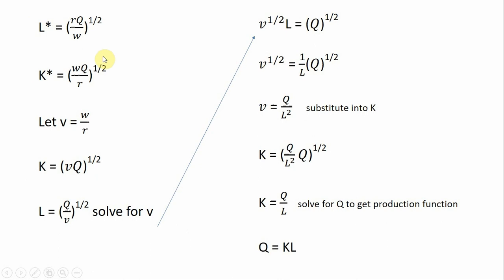Rewriting those results once again, and for simplification, let's let V equal the wage divided by the rental rate of capital. I'm going to substitute V back into our input demand functions. For K, we see W divided by R, so since V is W over R, I'll plug that in. For L, we've got R divided by W, which is just the reciprocal of V, so for the labor input demand we now have Q divided by the square root of V.